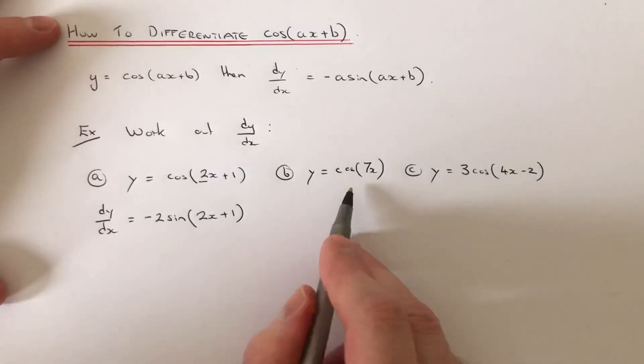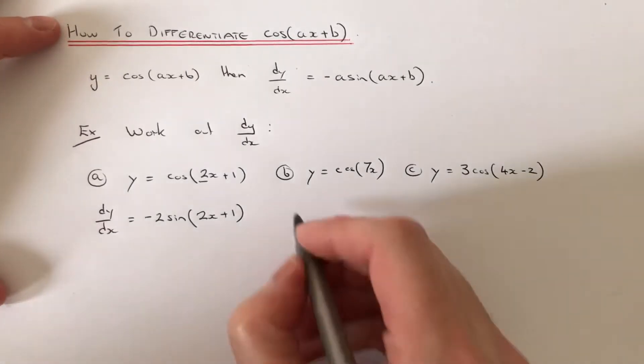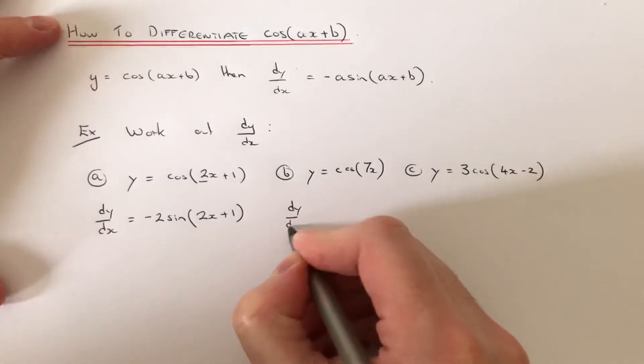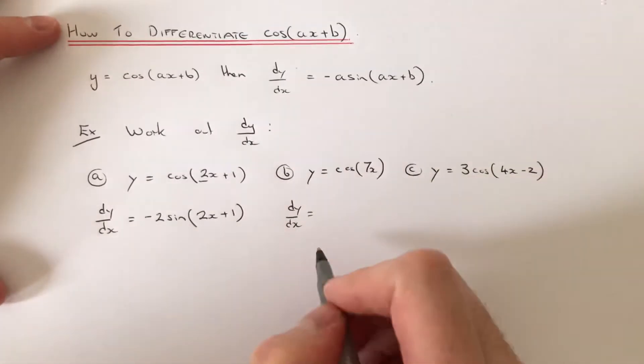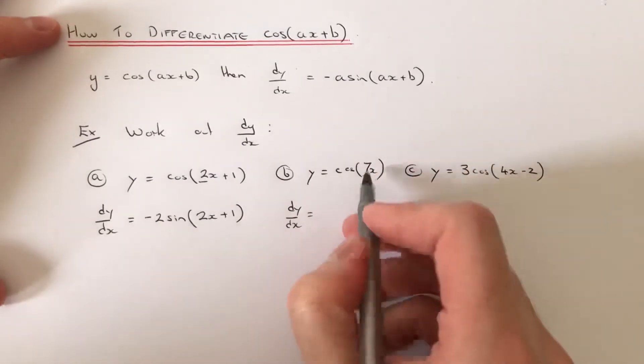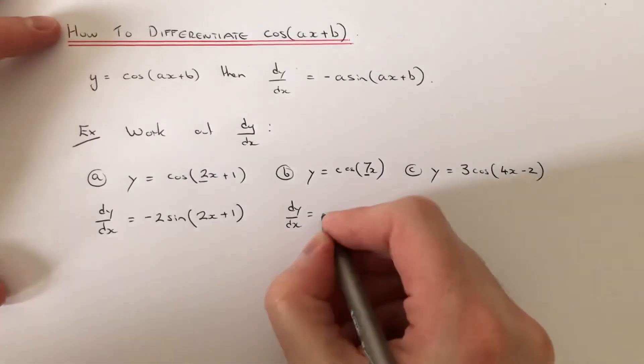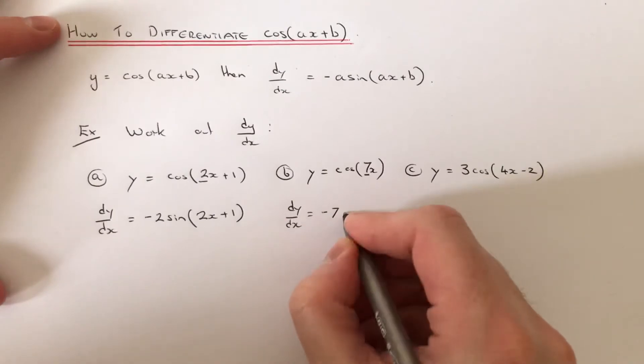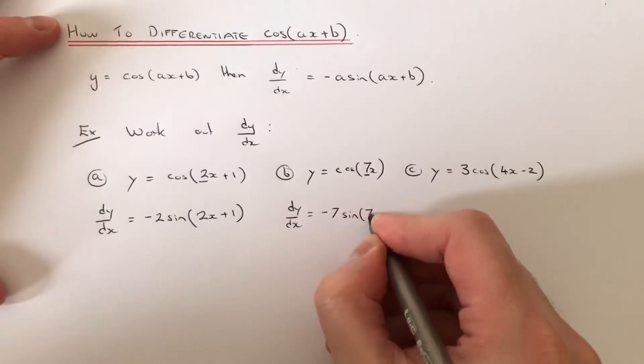So let's look at part b. This time we've got y equals cos(7x). Again, cos differentiates to minus sine and multiply the front of the function by 7 as well. So it would be minus 7 sine(7x).